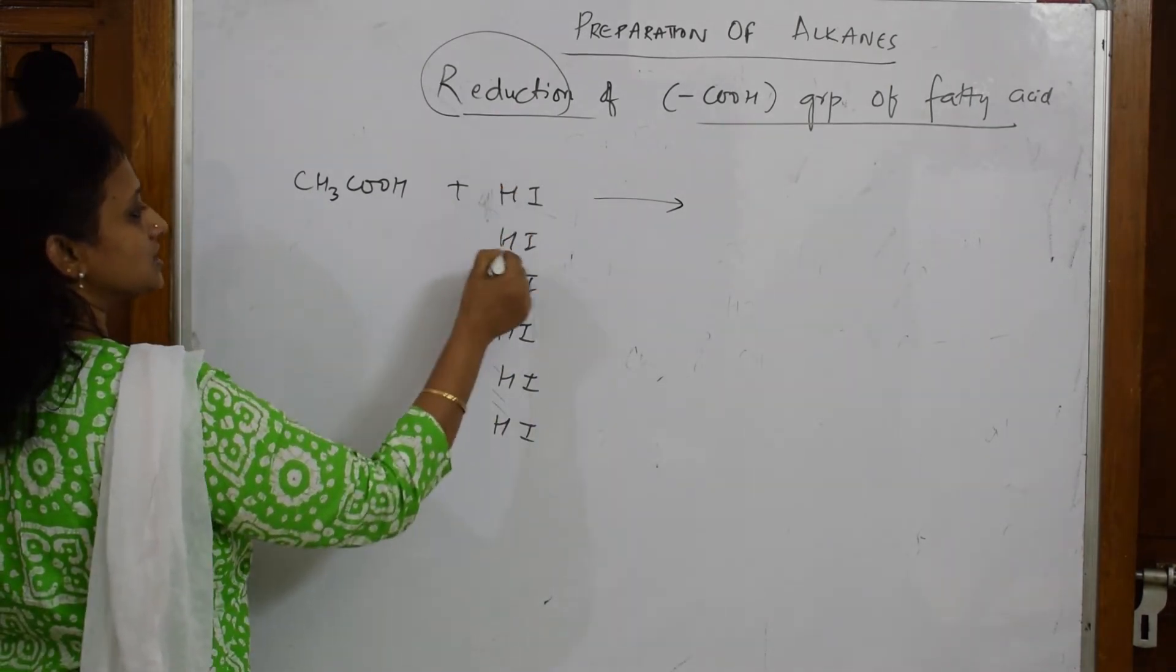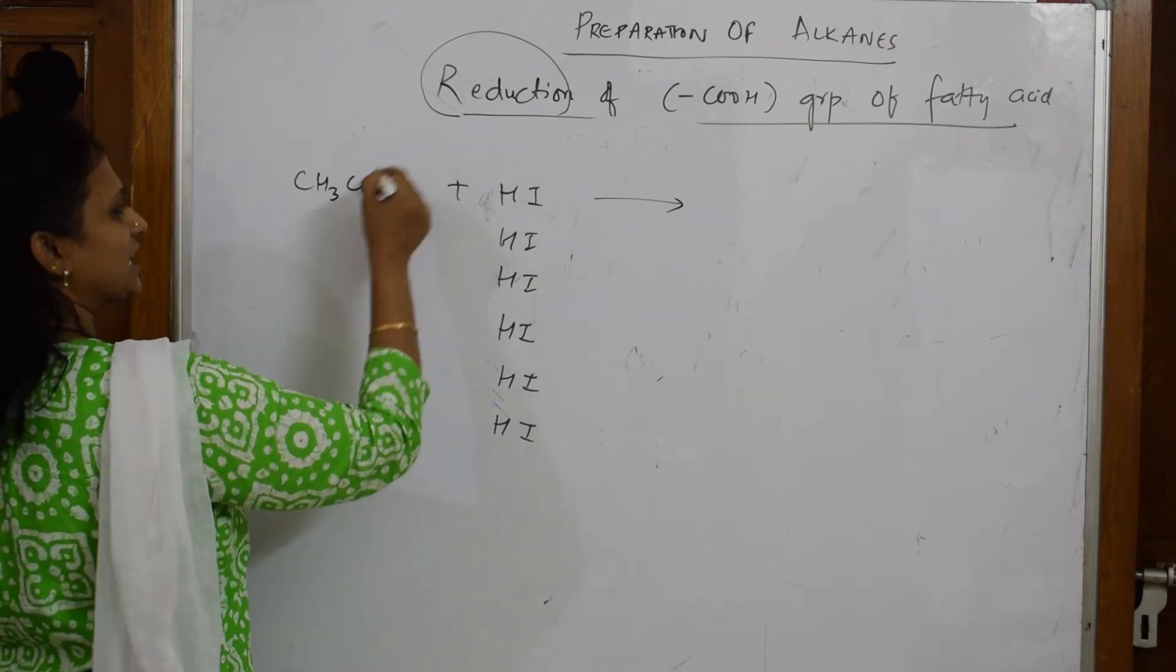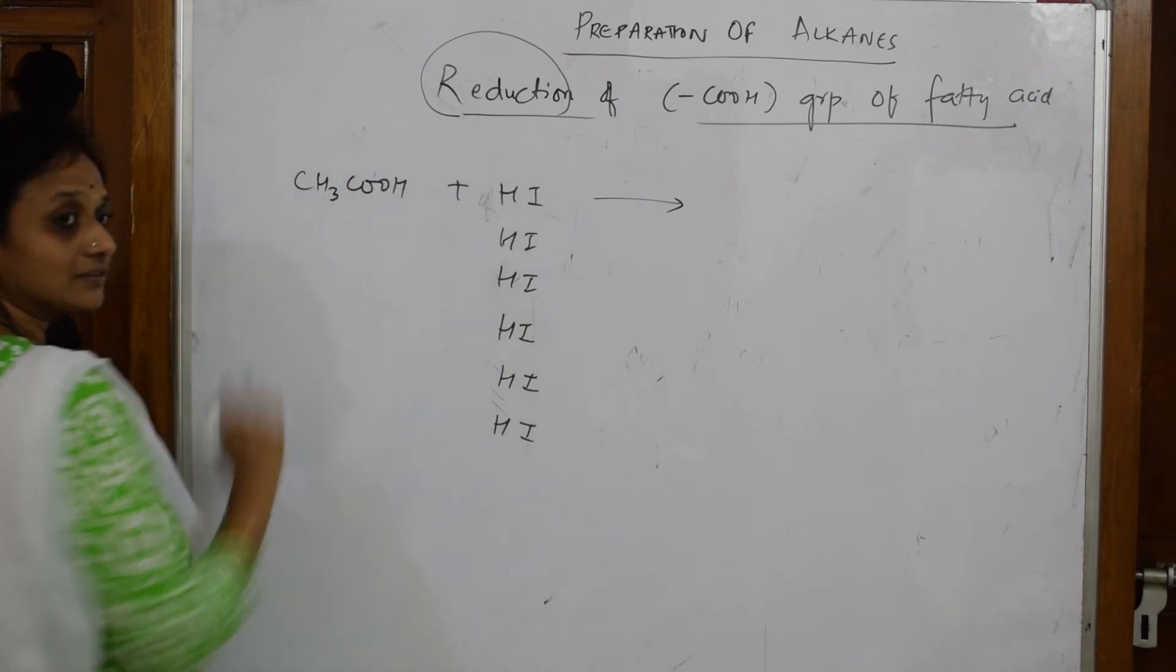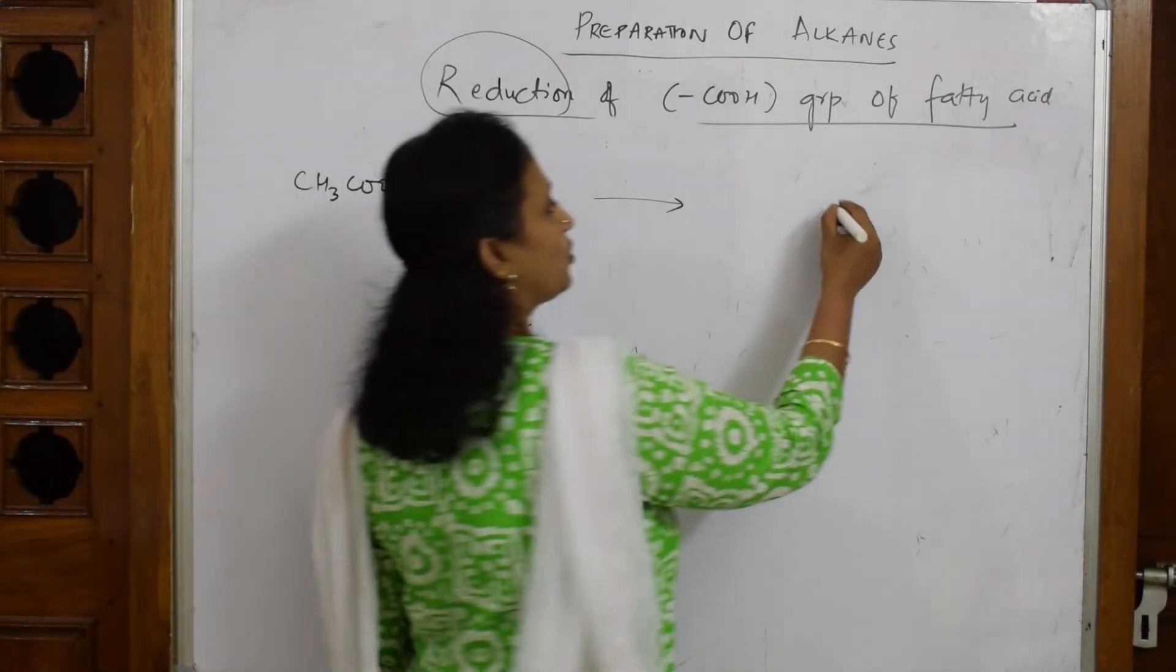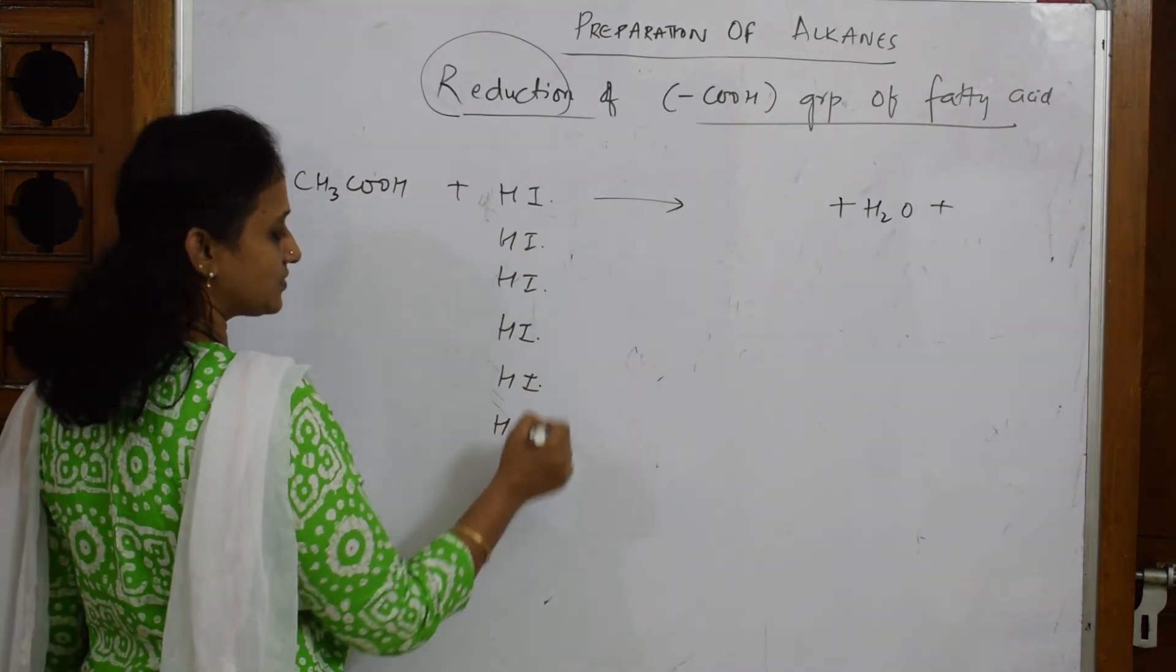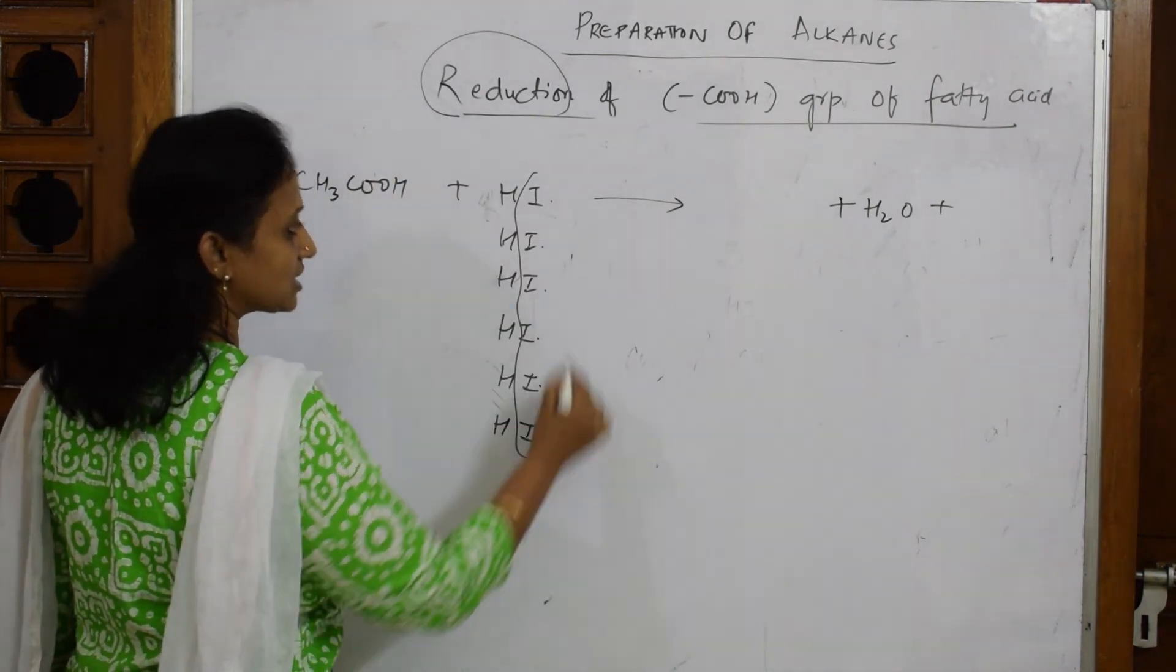Now what happens? First important thing, see here water molecule comes out. This H2 and O, you can take any way like this H2, this H2. So water, now after this how many HI's are there? One, two, three, four, five, six. These six HI's come up.